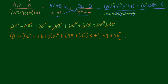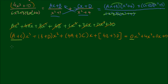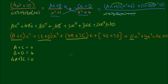We've expanded and simplified the numerator, and this equals 4x² + 10, which we rewrite as 0x³ + 4x² + 0x + 10. Equating coefficients gives us four equations: a + c = 0, b + d = 4, 4a + 3c = 0, and 4b + 3d = 10.